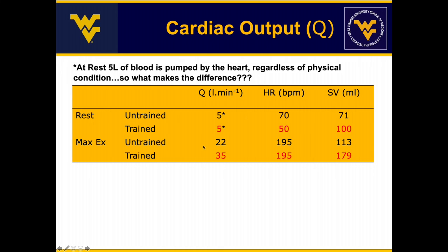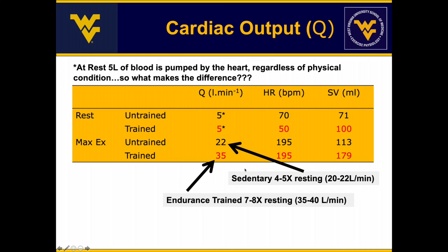Comparing maximal exercise in untrained versus trained individuals, the untrained individual increases cardiac output from 5 to 22 liters per minute at maximum exercise, while the trained individual increases from 5 to 35 liters per minute. They achieve the same maximal heart rate, but the trained athlete's heart has adapted — it's larger, more efficient, and has a stronger ability to pump and contract, achieving a greater stroke volume that drives the higher cardiac output. This enables the trained individual to reach the finish line faster or run longer. The untrained individual sees a 4 to 5 fold increase from rest, whereas the endurance-trained athlete achieves a 7 to 8 fold increase compared to resting values.